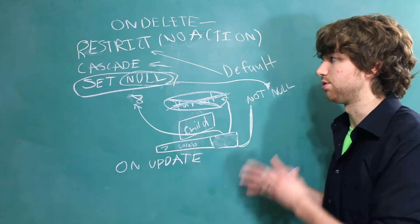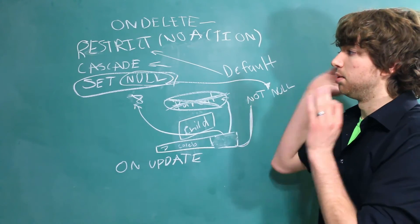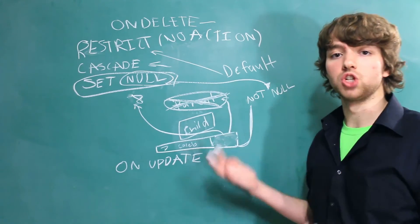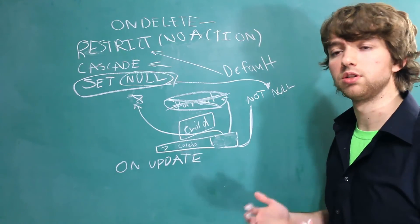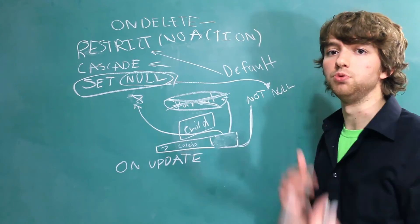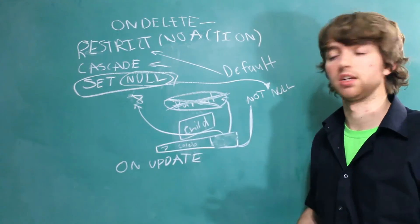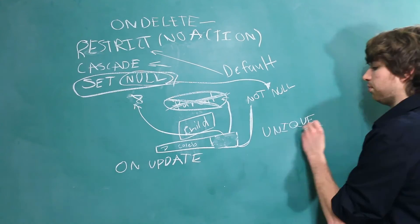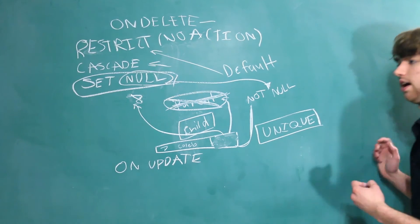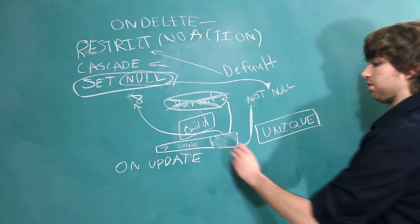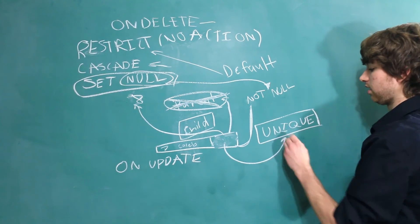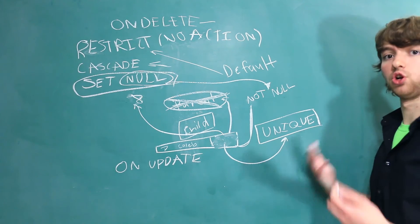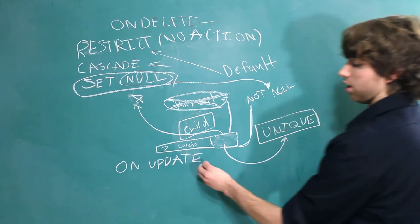And the reason OnUpdate is used less is because primary keys are not supposed to change. So it's really only useful when you're referencing unique data that's not a primary key. So a foreign key can reference a unique column, but a unique column does not have to be the primary key. So this could reference a column that's unique, and theoretically that data could change. So that's where the OnUpdate comes in.